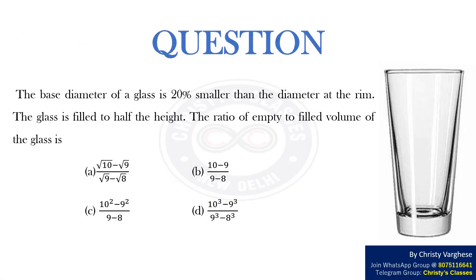In today's video, let us discuss a question on ratio. The base diameter of a glass is 20% smaller than the diameter at the rim. The glass is filled to half the height. The ratio of empty to filled volume of the glass is: